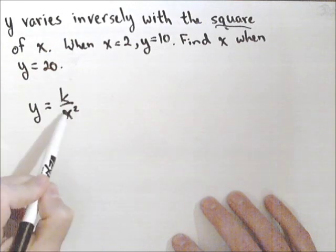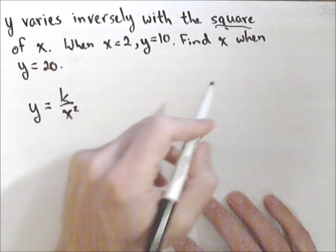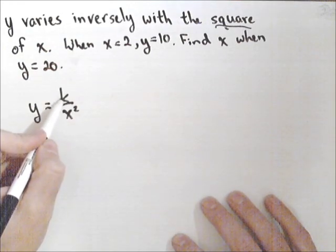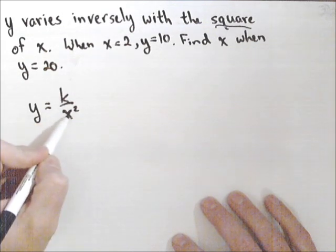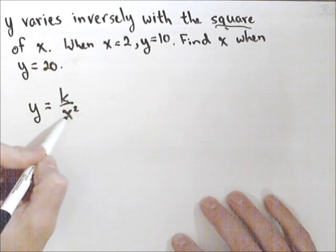Okay, this is inverse variation, so k is still our constant of proportionality as always, and because it's inversely proportional, the x actually goes on bottom, and it was the square of x, so it's an x squared.